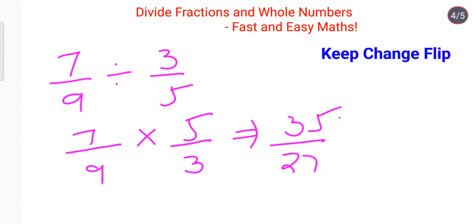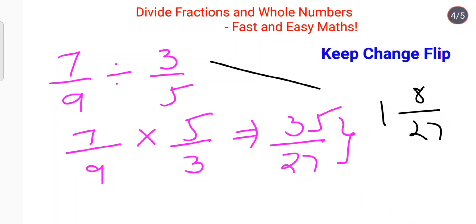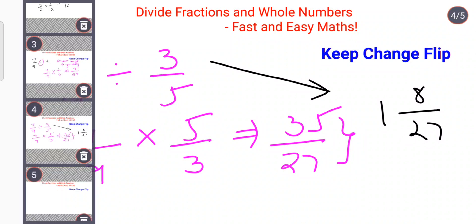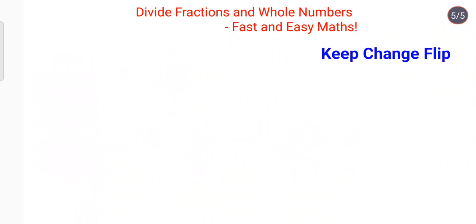Since 35 upon 27 is an improper fraction — the numerator is greater than the denominator — we convert it to mixed form. 27 goes into 35 once, and when you remove 27 from 35 you are left with 8. So the final answer is 1 and 8 upon 27.